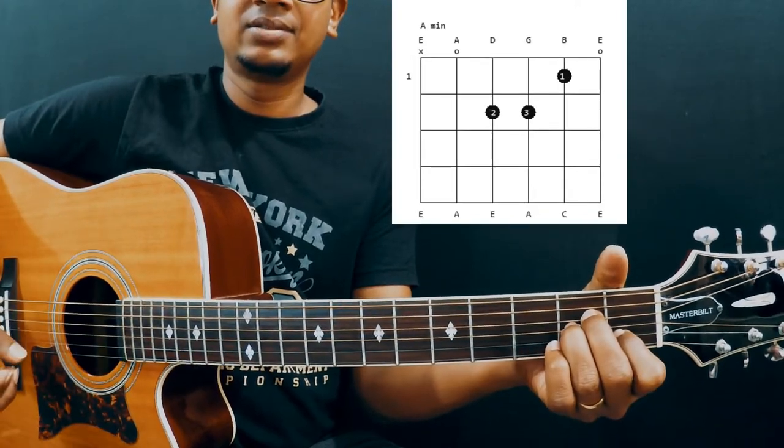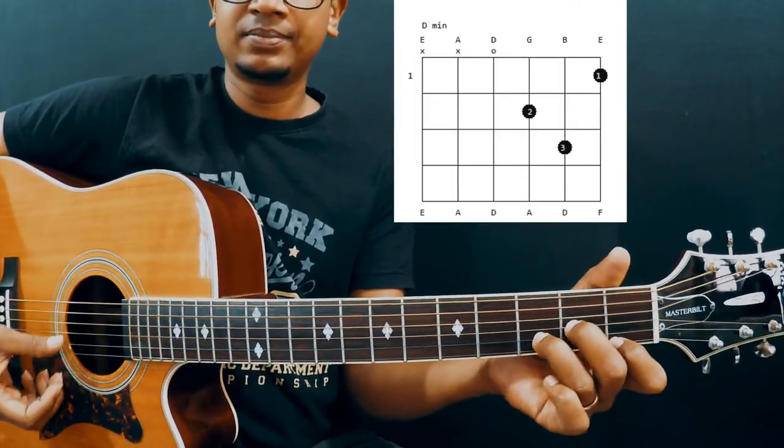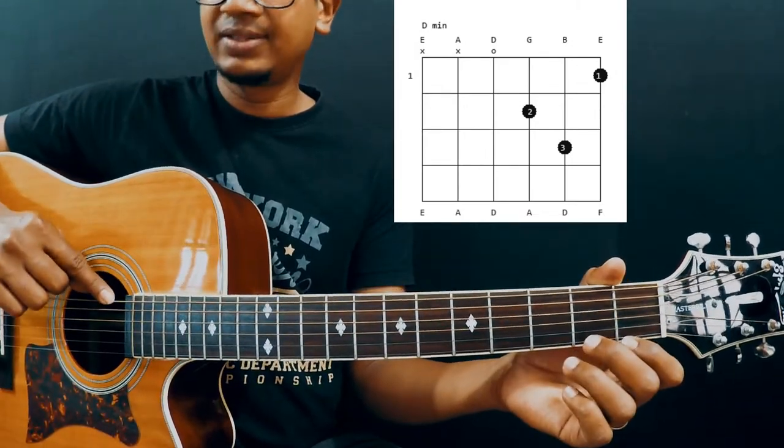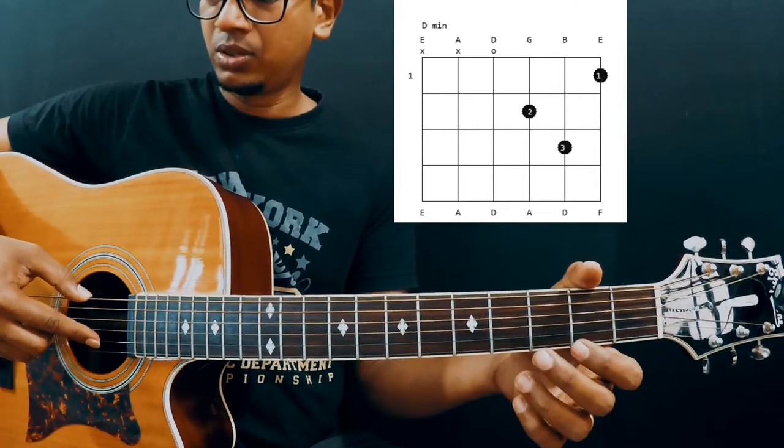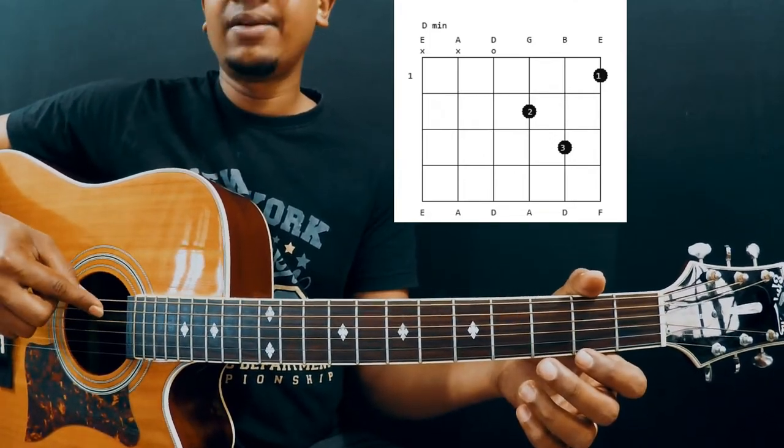Now we are going to learn D minor. It's a 4th string chord so you don't have to play 6th string and 5th string. By the way guys, strings are numbered in this way: 1, 2, 3, 4, 5, and 6.